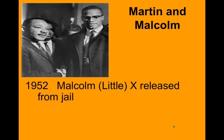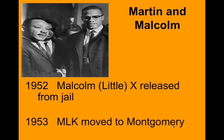In 1952, Malcolm X — born Malcolm Little, his birth name later changed to X — was released from jail. He had been inspired by the Nation of Islam while in jail and developed his civil rights tactics there. In 1953, Martin Luther King Jr. moves to Montgomery, Alabama, where he sees the Deep South really for the first time and witnesses how much hatred and segregation existed there, and he starts to form his beliefs as well.